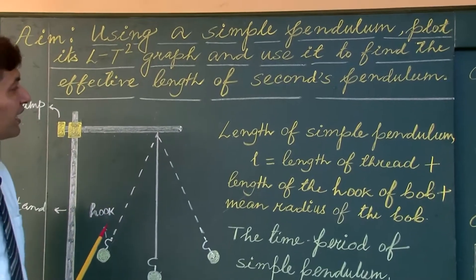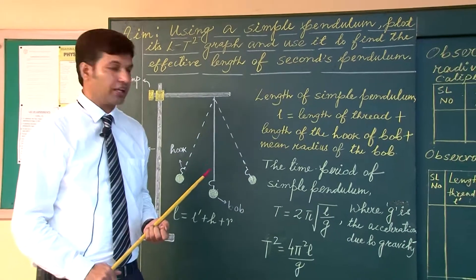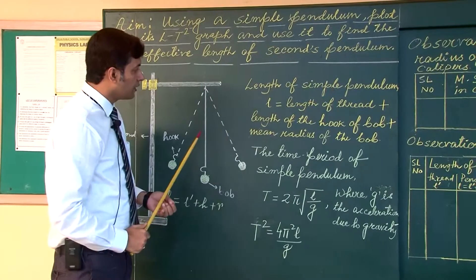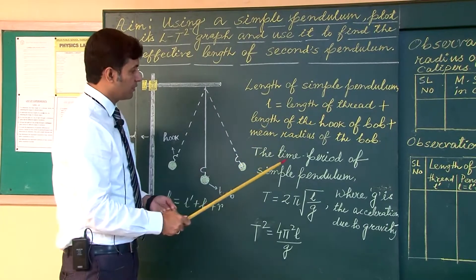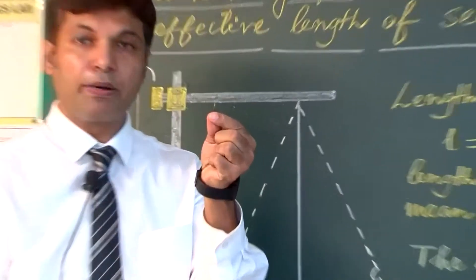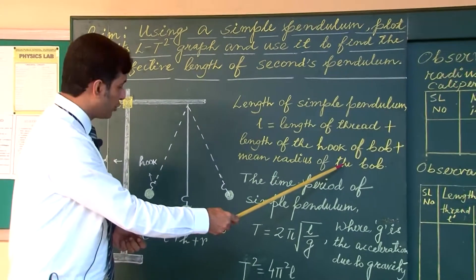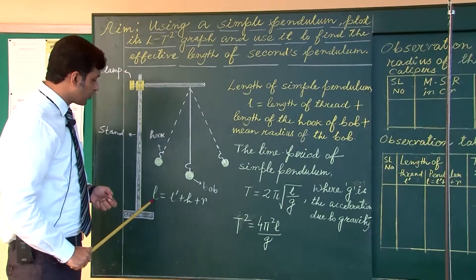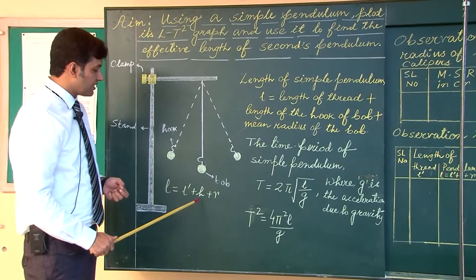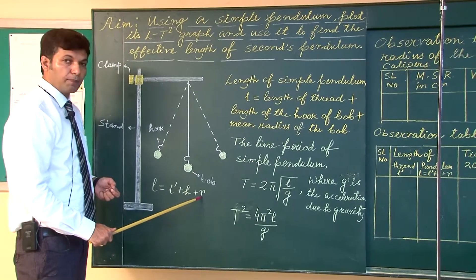Our main intention is to measure the effective length. The effective length of the simple pendulum equals the length of the thread plus the length of the hook plus the mean radius of the bob. So: L equals l-prime plus h plus r, where l-prime is the length of the thread, h is the length of the hook, and r is the mean radius of the bob.